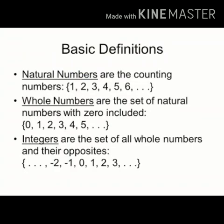Now we will revise all the definitions. First, natural numbers: natural numbers are the counting numbers and are denoted by capital N. For example, 1, 2, 3, 4, 5, etc. Second, whole numbers: whole numbers are the set of natural numbers with zero included. For example, 0, 1, 2, 3, etc.